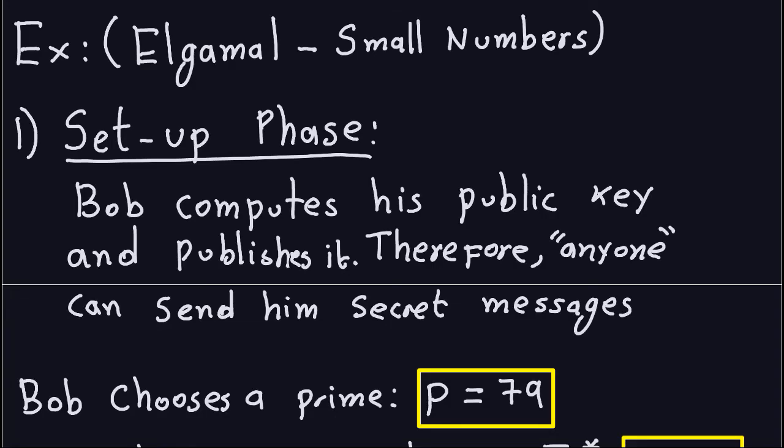Hello and welcome again. This is the second video on El Gamal Encryption Scheme. We're going to talk about one example that uses small numbers. In the previous video, we talked about the theoretical part, or how it is done using just letters. In this case, we're going to do an example with small numbers.